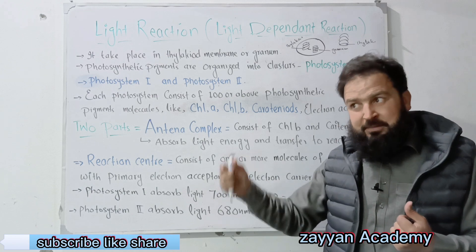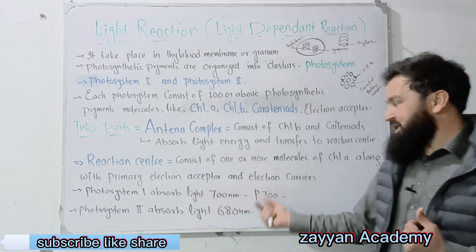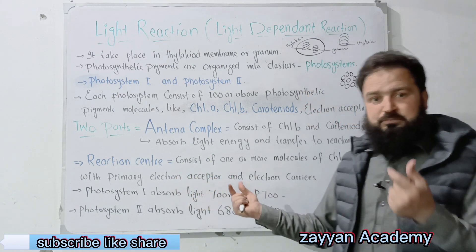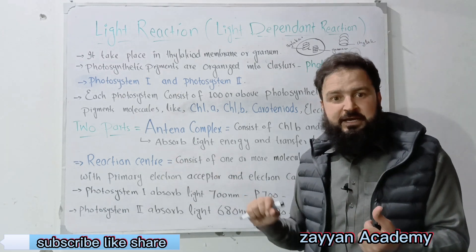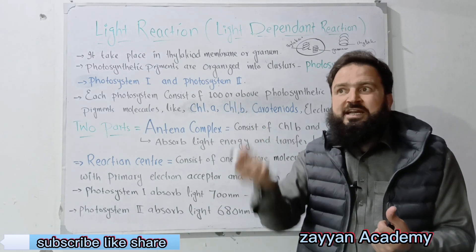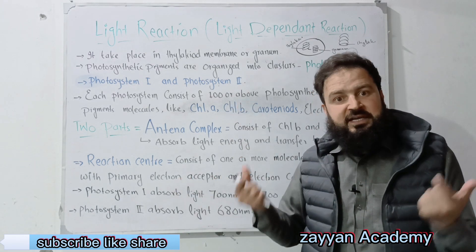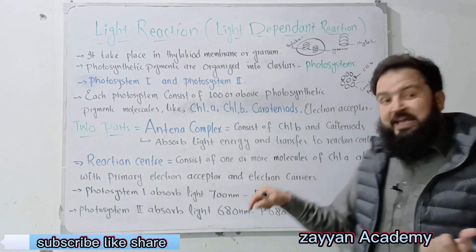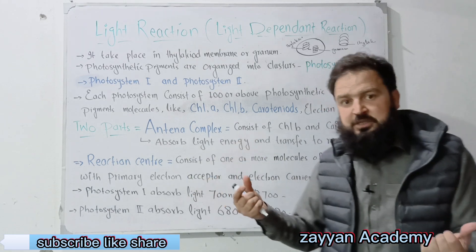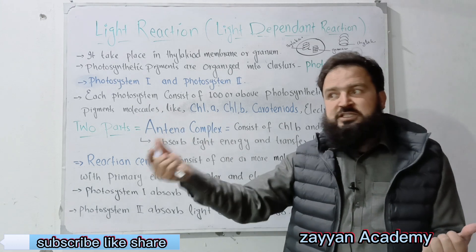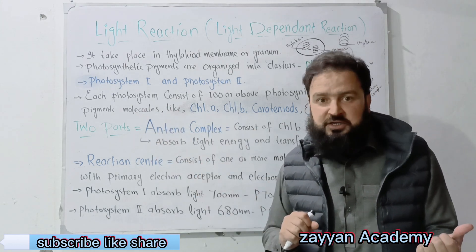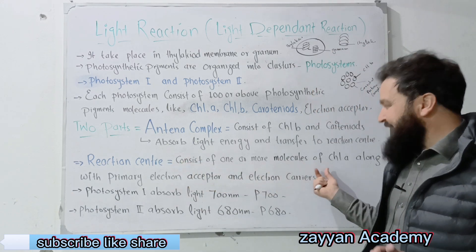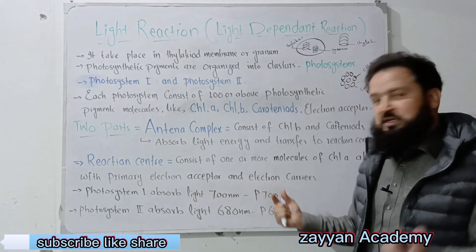When chlorophyll A acts as the primary electron acceptor along with electron carriers, the primary electron acceptor receives the electron. The electron's energy and the electron carriers are protein molecules. The reaction center is different — the electron acceptor and electron carriers are different.